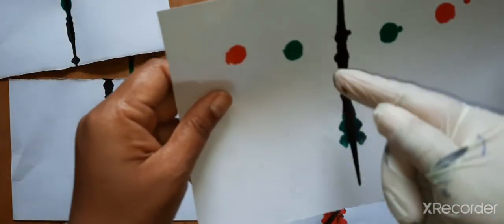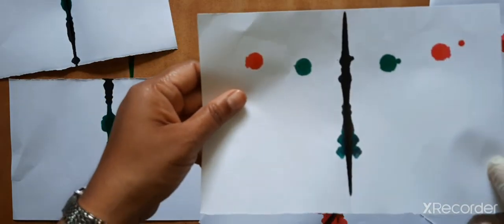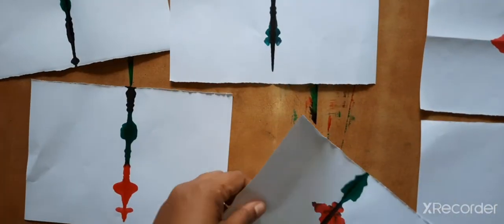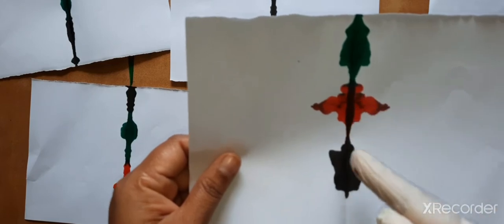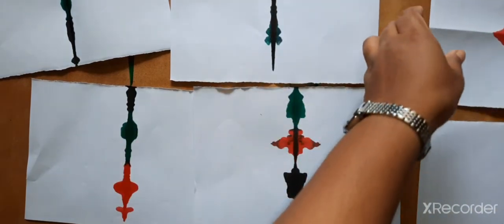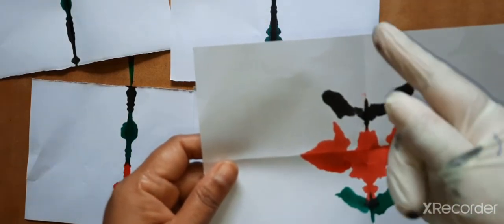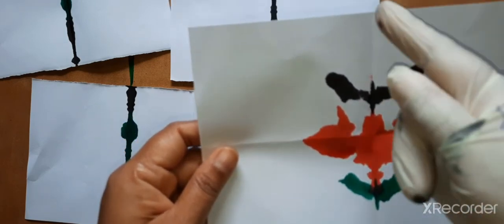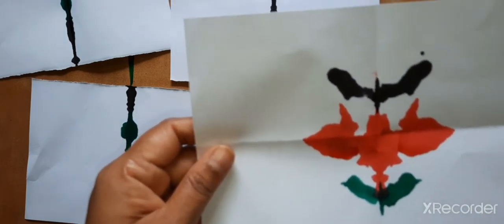Here also we can get a vertical line of symmetry. Here also we can divide this into two halves by putting a vertical line, that is a standing line.